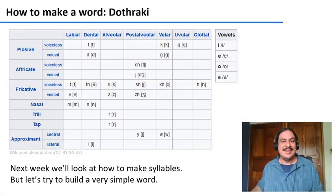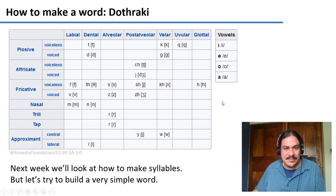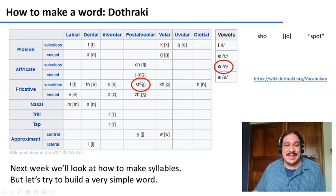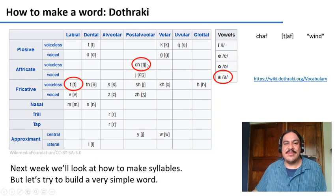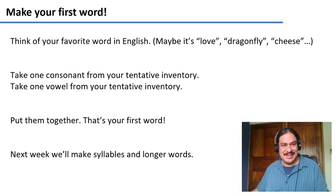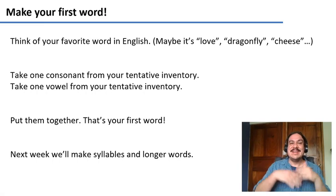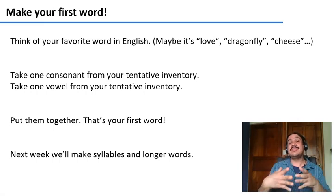Finally, make your first word. This is the inventory for Dothraki from Game of Thrones — dental stops, alveolar fricatives, rhotics, and four vowels. How do you build basic words? You combine sounds. For example, you take the post-alveolar SH and the vowel O to make SHO, meaning 'spot.' Or you take the affricate CH, the vowel A, and the voiceless labial fricative F to make CHAF, meaning 'wind.' Think of your favorite word in English — love, dragonfly, cheese — take one consonant and one vowel from your inventory, combine them, and that's the first word in your language. Next week, we'll study syllables, and this will allow us to make longer words.